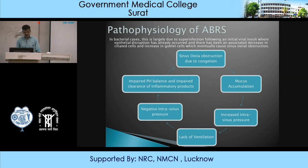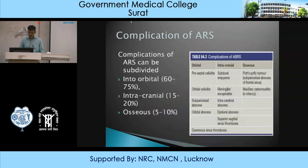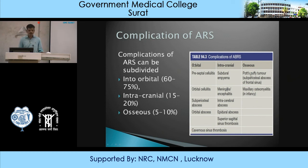Complications of ARS are subdivided into orbital (most common, 60–75%), intracranial (15–20%), and osseous (5–10%). Orbital complications include preseptal cellulitis, orbital cellulitis, subperiosteal abscess, orbital abscess, and cavernous sinus thrombophlebitis. Intracranial complications include subdural empyema, meningitis, encephalitis, intracerebral abscess, epidural abscess, and superior sagittal sinus thrombophlebitis. Osseous complications include Pott's puffy tumor (subperiosteal abscess of the frontal sinus) and maxillary osteomyelitis. Over the years, complication rates have significantly decreased, thought to be due to the antibiotic era.